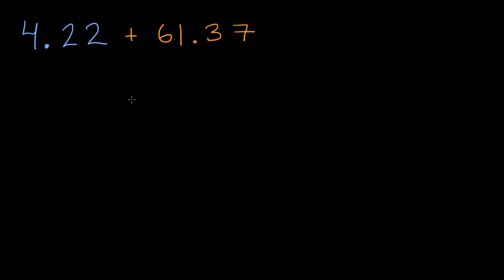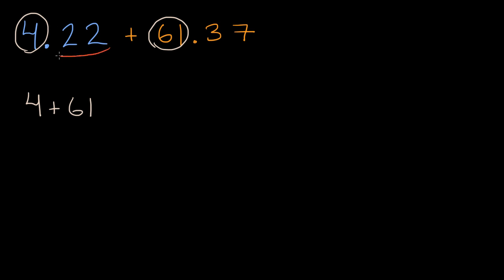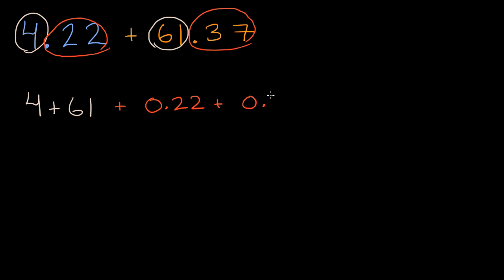The way my brain tries to tackle it is: I have four and 22 hundredths and 61 and 37 hundredths. How about I add the four plus the 61, and then separately add the 22 hundredths to the 37 hundredths? So I'm going to add four plus 61, and then add 22 hundredths plus 37 hundredths.